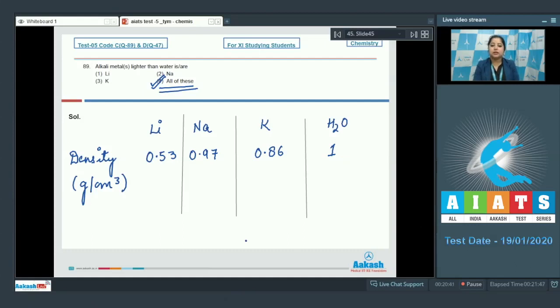So again, it is very clear that the density of lithium, sodium, and potassium are less than that of water. That means all the given three elements are lighter than that of water. So the correct answer is option number 4.